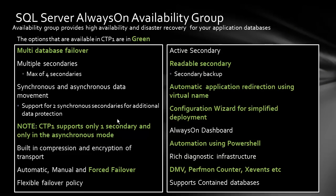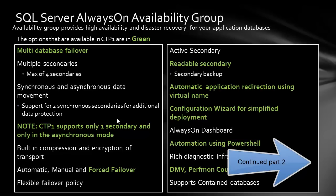Active secondary features include readable secondary and the ability to take backups from the secondary. Automatic application redirection using virtual names is supported, and the configuration process is very simplified. The Always On dashboard is not yet available in CTP1 but will be in CTP2 — it lets you see all your replicas on one screen. Automation using PowerShell is another big feature, allowing you to automate almost every activity of configuring Always On. Rich diagnostic infrastructure including DMVs, performance counters, and Extended Events have all been added to support Always On.